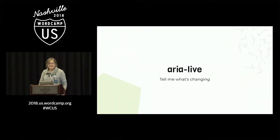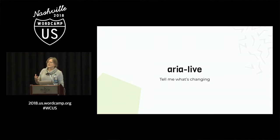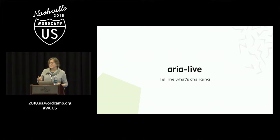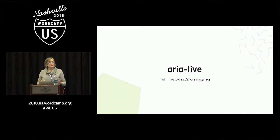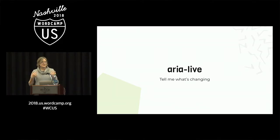The next example is aria-live: tell me what's changing. If you can see, you can see what's changing on a page. But if you have a change without a page reload — for example, search results displayed dynamically — if you can see it, you see the new results. But if you cannot see, it has to be announced to you, and that you do with aria-live.